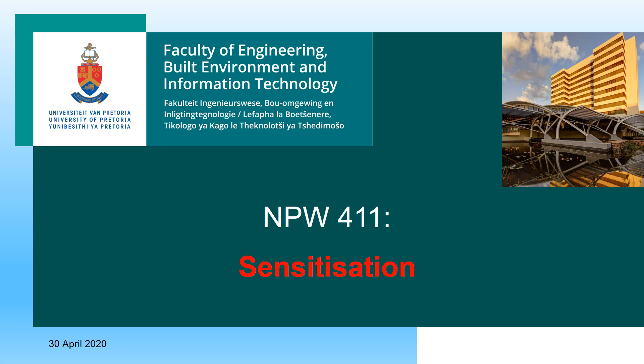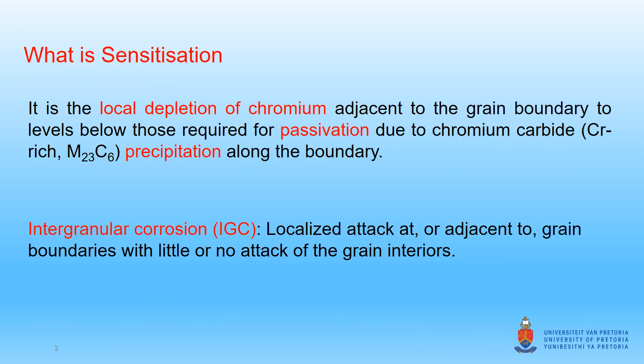Sensitization. We will begin by defining what is sensitization. It is the local depletion of chromium adjacent to the grain boundaries to levels below those required for passivation. This will occur because of chromium carbide precipitation along the grain boundaries. Stainless steels are expected to exhibit excellent corrosion resistance, but the depletion of chromium along the grain boundaries results in intergranular corrosion or intergranular attack.